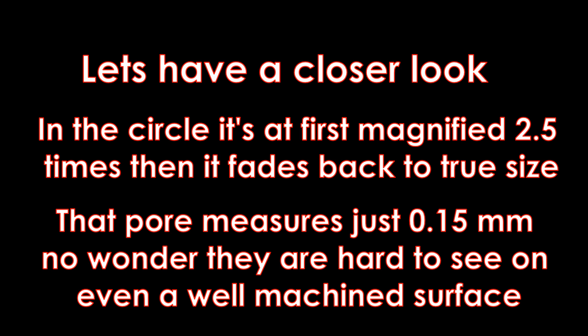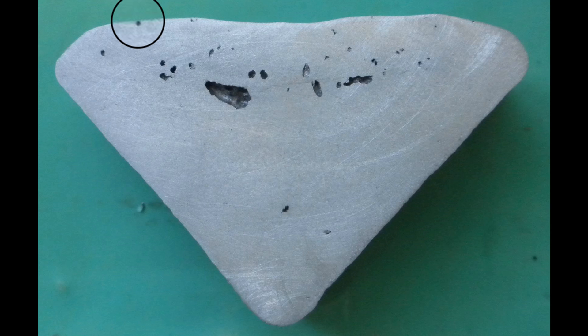Let's have a closer look at some of that porosity. In the circle it's at first magnified two and a half times and then it slowly fades back to normal size. Here we go two and a half times and now we are just starting to fade back and there we go it's back to true size.